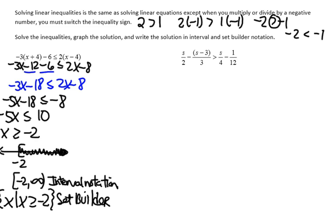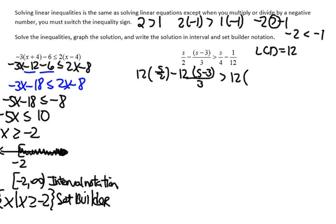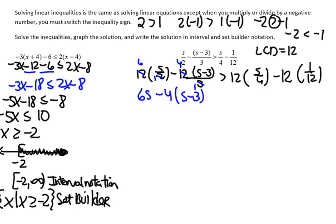Now for the inequality on the right — we don't like working with fractions, so the best way to get rid of fractions is to multiply every single term by the least common denominator, or LCD. The LCD in this case is 12, so I multiply every term by 12. Then I divide out common factors: dividing out a 2 gives 6s, and dividing out a 3 gives 4 minus 4 times the quantity s minus 3. Then I distribute the negative 4.